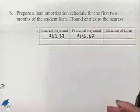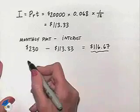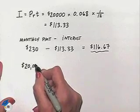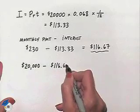Now what will be the balance of the loan? We're going to take the amount of the principal and subtract that from the total amount. So we'll have $20,000 minus $116.67.